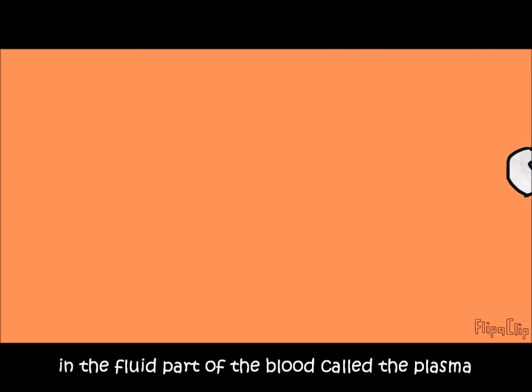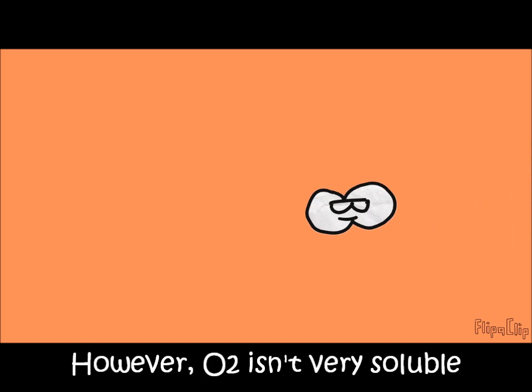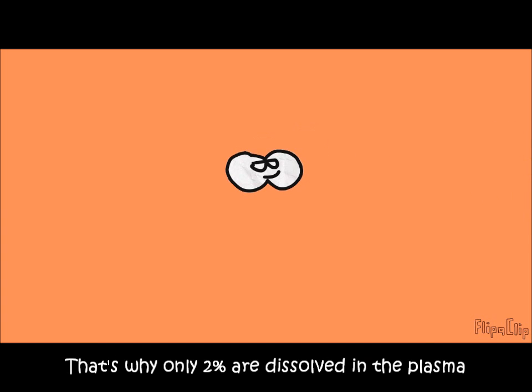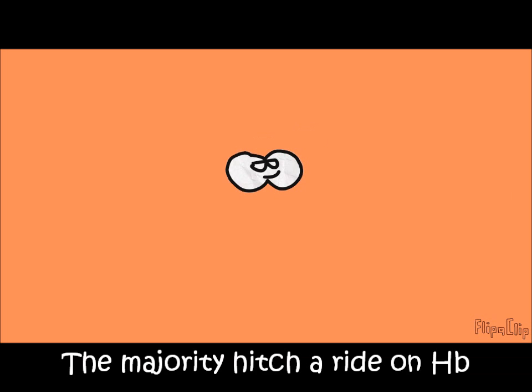But what about the remaining 2%? These molecules flow outside of red blood cells, in the fluid part of the blood called the plasma. However, oxygen isn't very soluble. That's why only 2% have dissolved in the plasma. Most of them just hitch a ride on the hemoglobin.